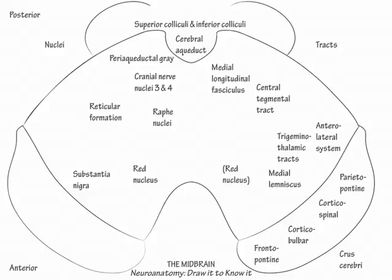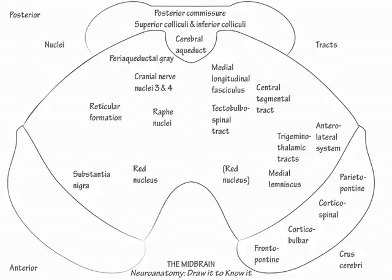Next draw the posterior commissure. The pathway for the pupillary light reflex passes through the posterior commissure, and the nucleus of the posterior commissure helps control vertical eye movements. Next, label the tectobulbar spinal tract, which originates in the superior colliculus and decussates in front of the medial longitudinal fasciculus. Regional stimulation of the superior colliculus stimulates efferent impulses through the tectobulbar spinal tract to the brainstem and upper cervical nuclei for head and eye movements.